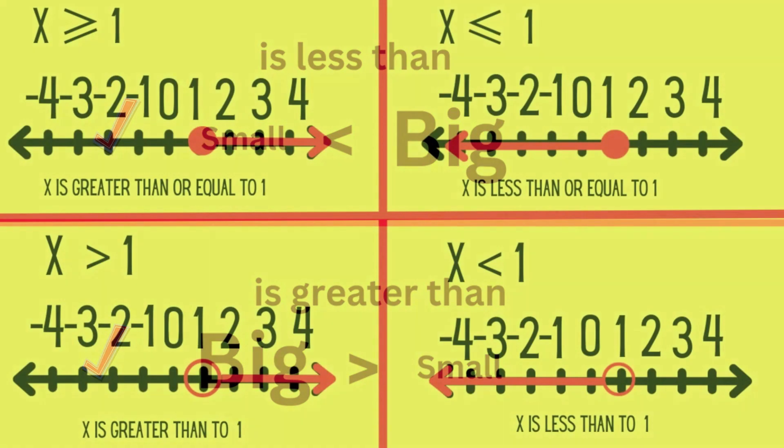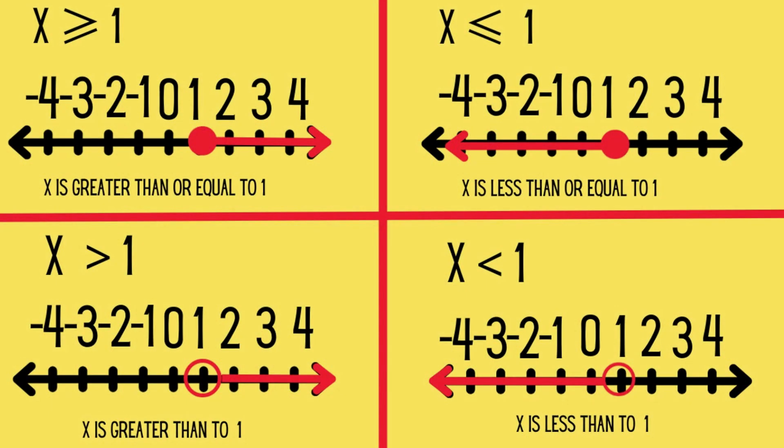When graphing, use an open circle to indicate less than and greater than because the number is not included. And a closed circle to indicate less than or equal to and greater than or equal to because the number is included.